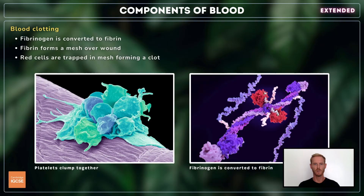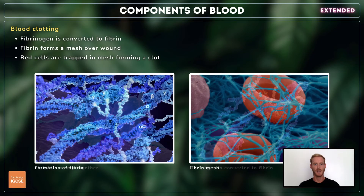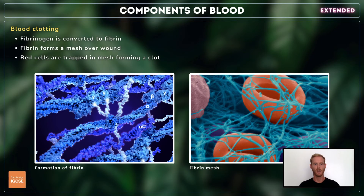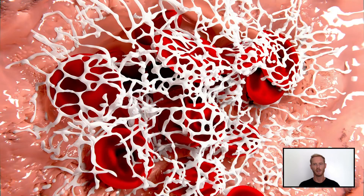Whenever a blood vessel is damaged, platelets clump together to block the smaller capillaries and release a substance that acts on a soluble protein in the plasma called fibrinogen. By the action of enzymes, fibrinogen is converted into the insoluble molecule fibrin, which forms a branching network across the wound. Red blood cells are trapped in the network, forming a clot that stops further blood loss and prevents pathogens from entering the bloodstream.